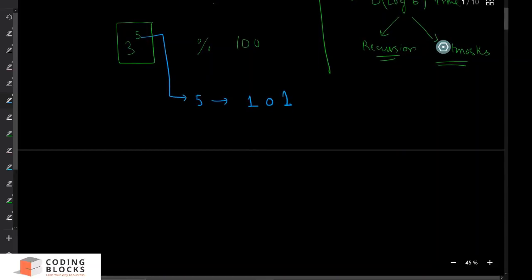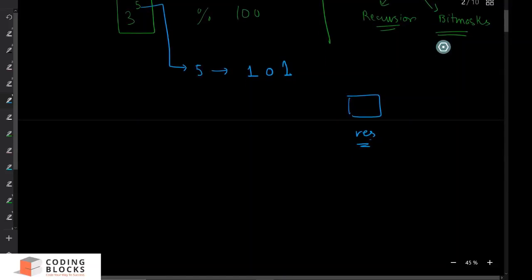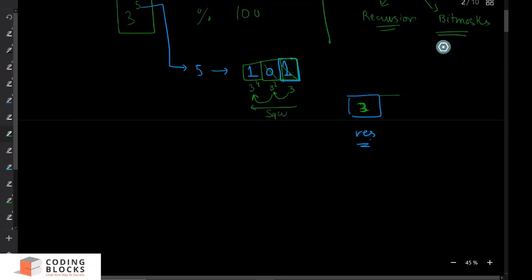We take one variable 'result' to store the final answer. Starting from the least significant bit, I extract the bit — since it is 1, I multiply result by 3. Moving to the next position, I square 3 to get 3². Since that bit is 0, I don't multiply anything into result. Moving again, the number becomes 3⁴. Since that bit is 1, I multiply result by 3⁴. The final answer is 3 raised to the power 5.